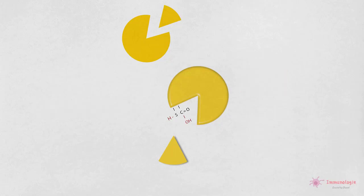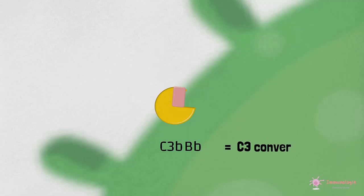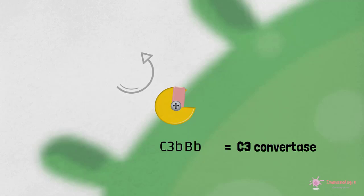Nous continuons la cascade en cas d'infection. Le facteur B se lie au fragment C3b, qui est maintenant fixé de manière covalente à la surface cellulaire. Le facteur B est à son tour clivé par le facteur D, générant les fragments Ba et Bb. Ce dernier reste attaché au C3b pour former le complexe C3b-Bb, qui représente la C3-convertase de la voie alterne. Elle est instable jusqu'à ce qu'elle soit liée par la properdine, qui est également une protéine sérique. Une fois stabilisée par la properdine, les complexes C3-convertases associés aux cellules génèrent rapidement un grand nombre de molécules C3b sur la surface microbienne.